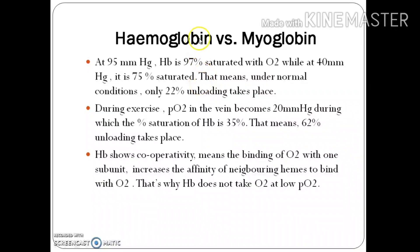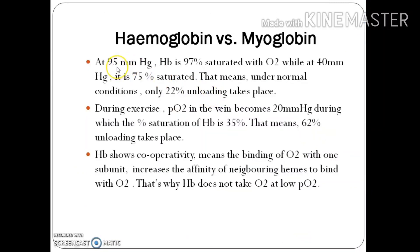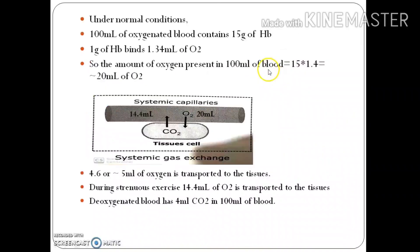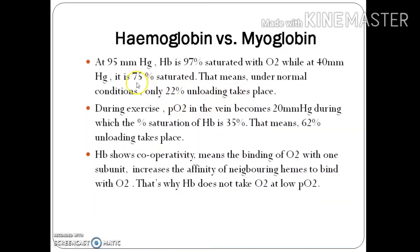Let's start with hemoglobin versus myoglobin. At 95 mmHg partial pressure of oxygen, hemoglobin is 97% saturated. As shown in the diagram, when pO2 falls to 40 mmHg — at the region of systemic veins, right chamber of the heart, and pulmonary artery — the percent saturation of hemoglobin is 75%. That means under normal conditions, only 22% unloading takes place.